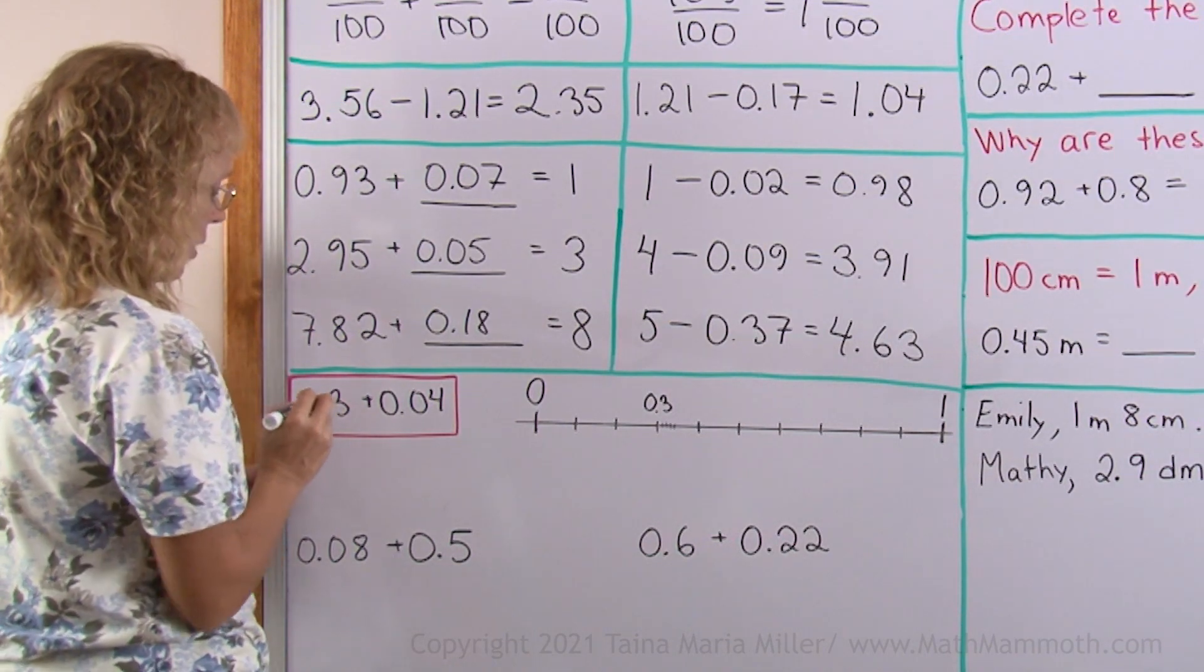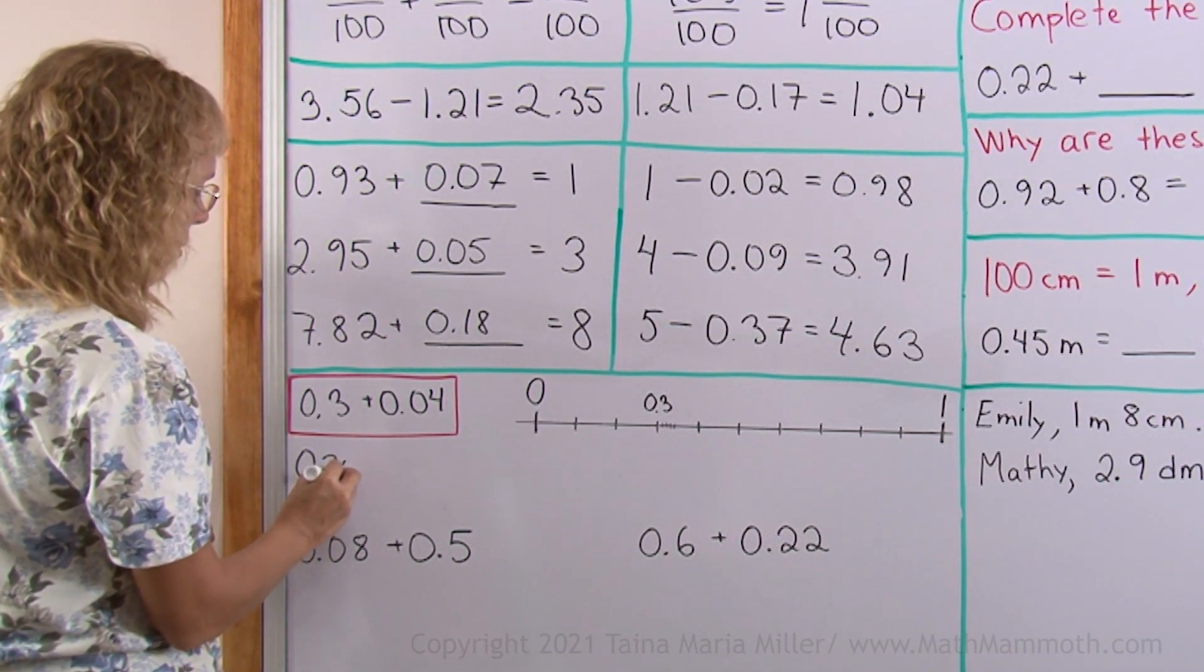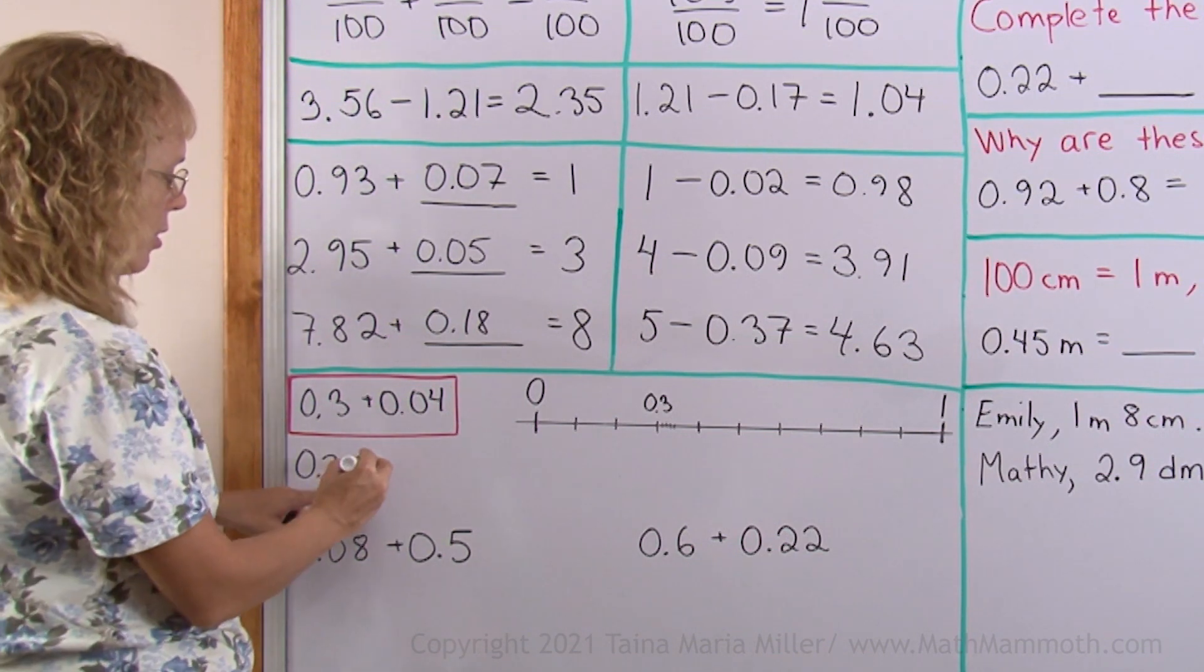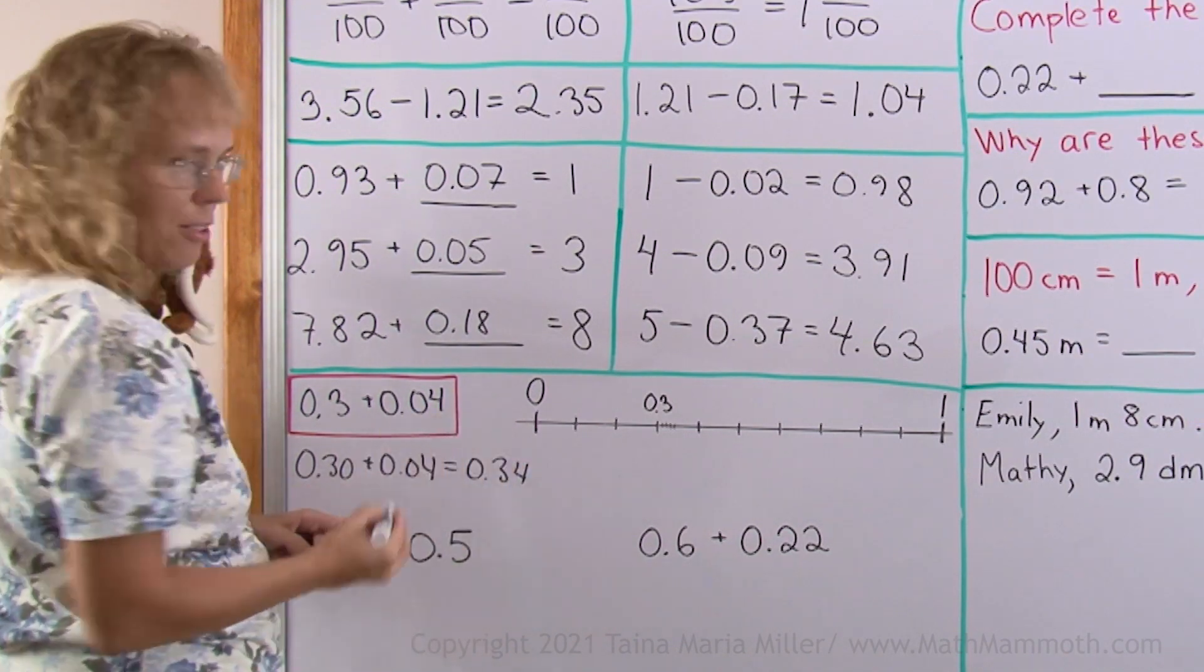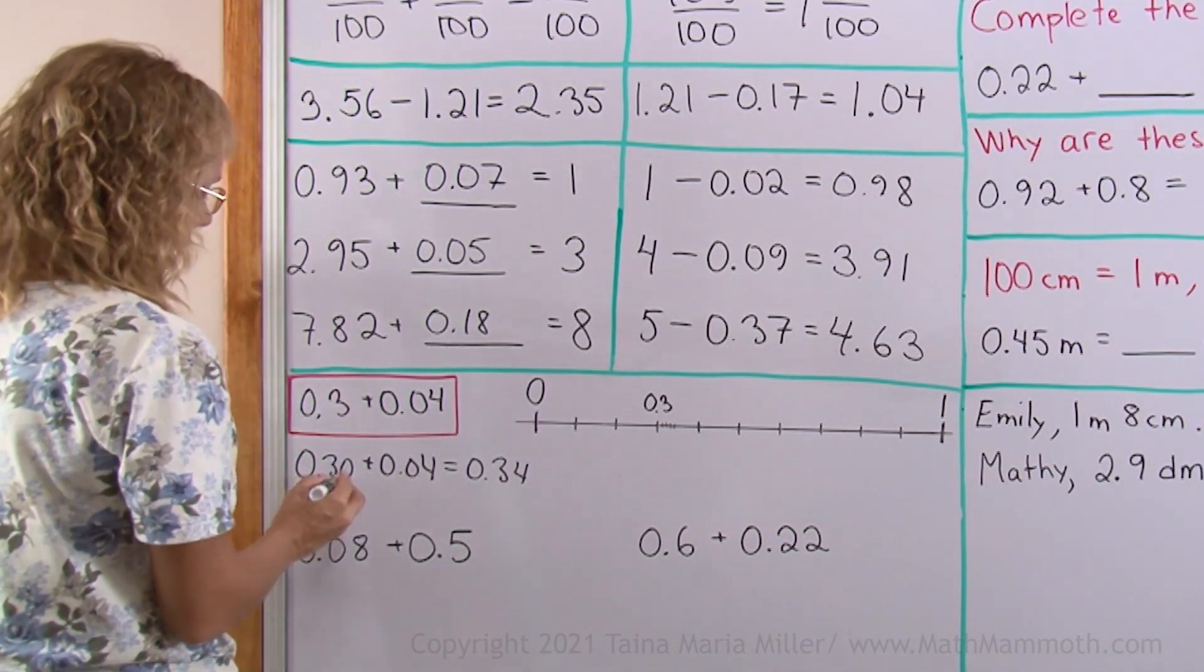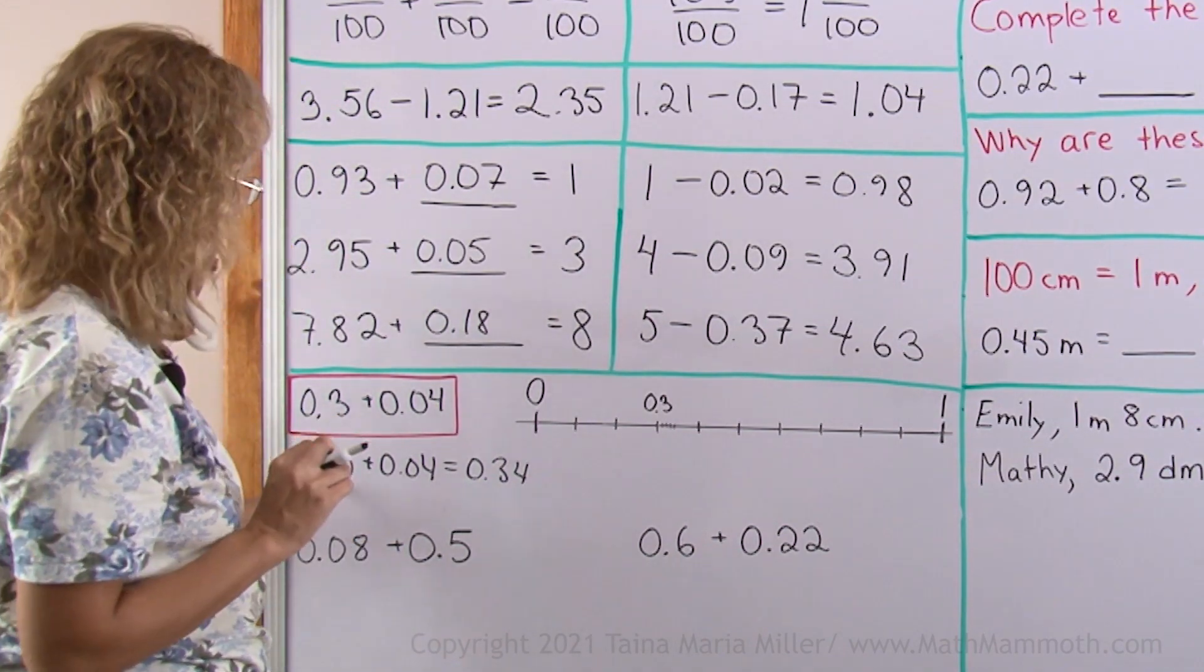But to see it even better, let's write 0.3 as 0.30. 30 hundredths plus 4 hundredths equals 34 hundredths, like that. Okay? Remember, 3 tenths equals 30 hundredths.